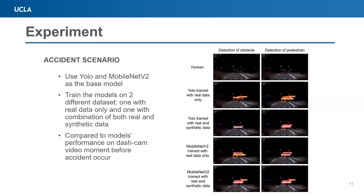We performed the same testing procedure as before, but on an accident scenario. The accident we chose is the Uber car crash in 2018. We used frames from the video camera 30 seconds before the accident to test our model. The result is shown in the figure to the right. Both YOLO and MobileNet V2, after being trained on the combination of real and synthetic data, are able to detect the pedestrian earlier, with a more accurate bounding box.